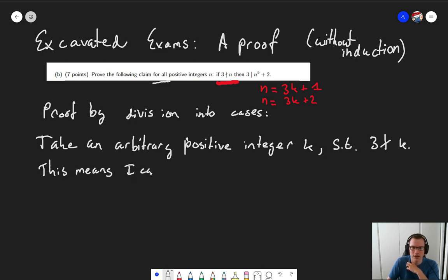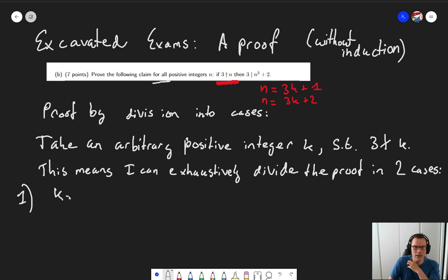This means I can exhaustively divide the proof in two cases. Case 1: k equals 3 times some integer plus 1. And Case 2: k equals 3 times some integer plus 2. And now for both I do the math. So what do I need to show? I need to prove that k squared plus 2 is divisible by 3.